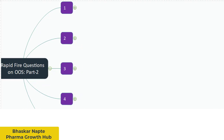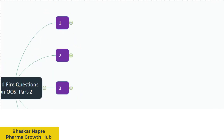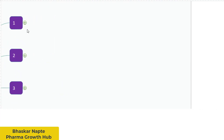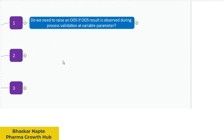The first question for discussion today: do we need to raise an OAS if an OAS result is observed during process validation at variable parameters? As part of a process challenge, you may be deliberately changing the process parameters — there can be a decrease or increase in speed during compression, or a decrease or increase in blending time — and this variation can result in an unpredictable, out-of-specification result.